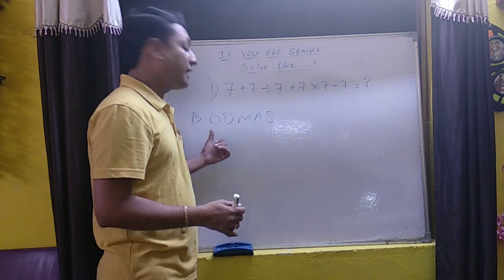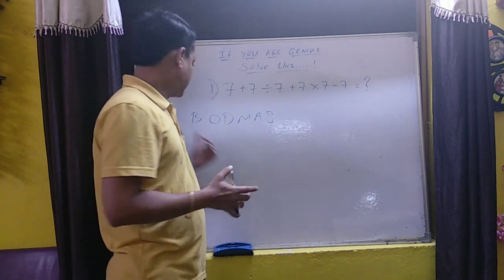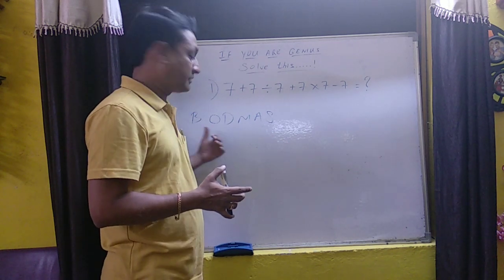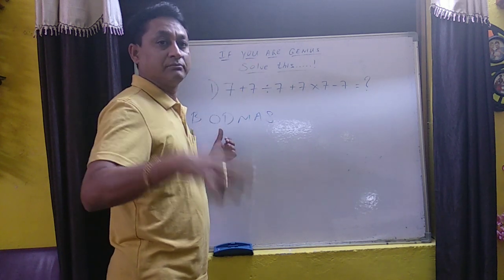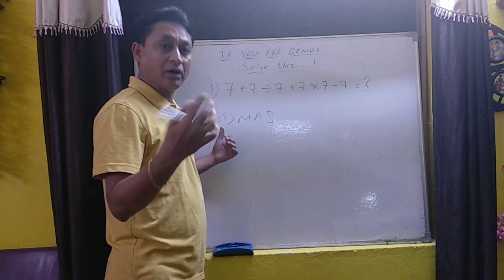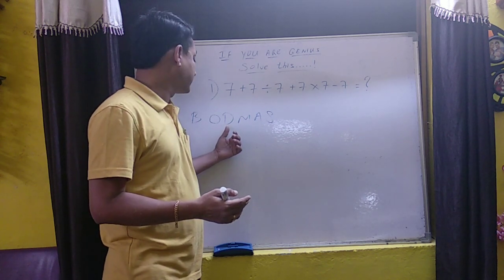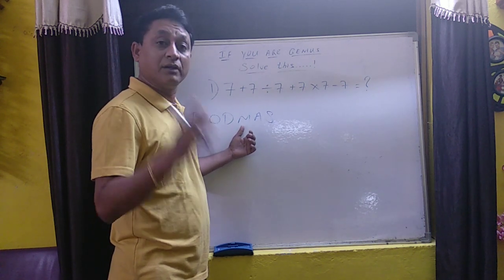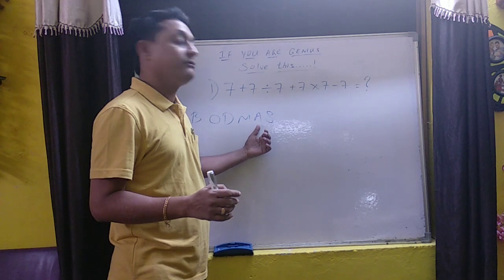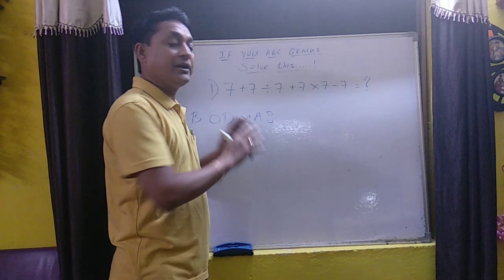That means we have to solve all these mathematical problems in this order. We have to open the brackets first, then we have to check the order, like if it is exponential or under root of or something like that. Then the third rule which applies is division. We have to solve the division, then we have to solve the multiplication issues, then we have to solve for additions and then we have to solve for subtraction at the end.